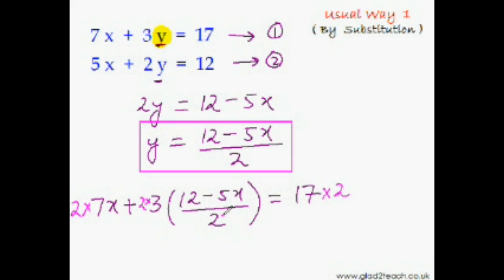See, now this 2 cancels out. So now simplify it. This is 14x, and we can open the bracket. This would become 36—3 times 12, right?—36, and this would become minus 15x.